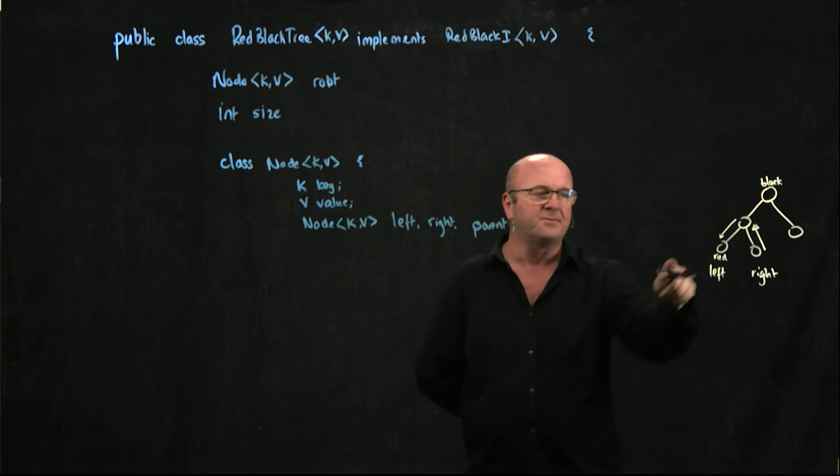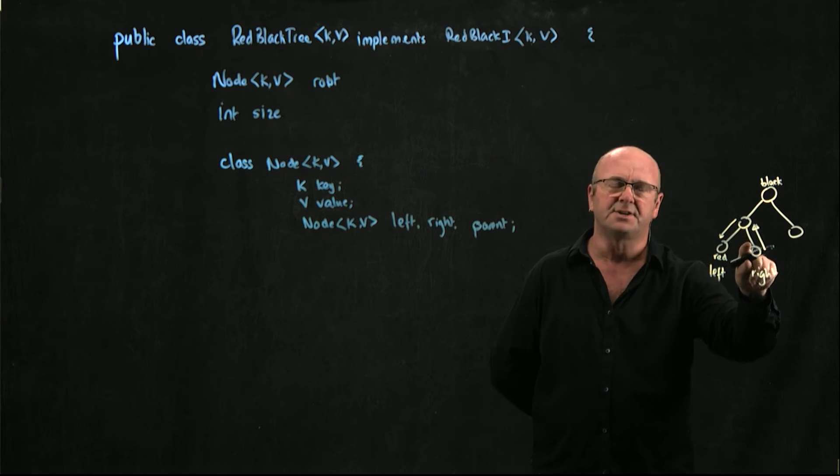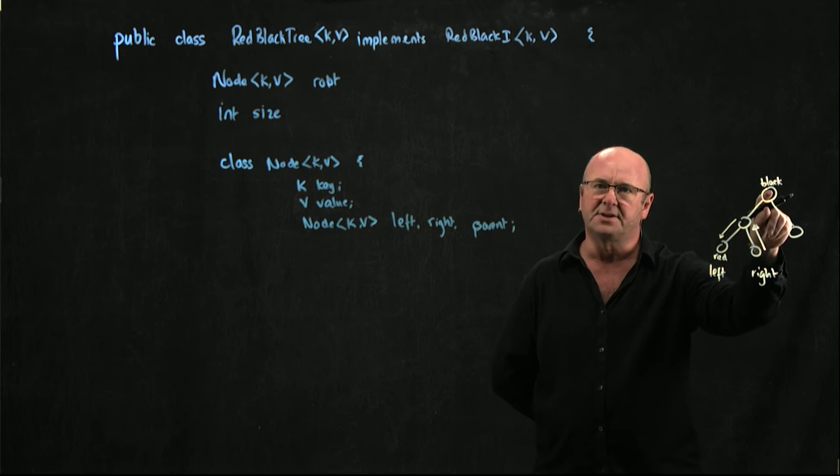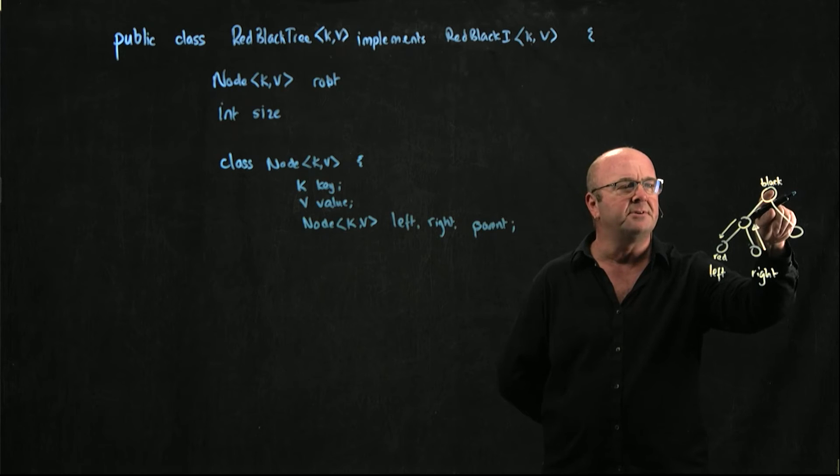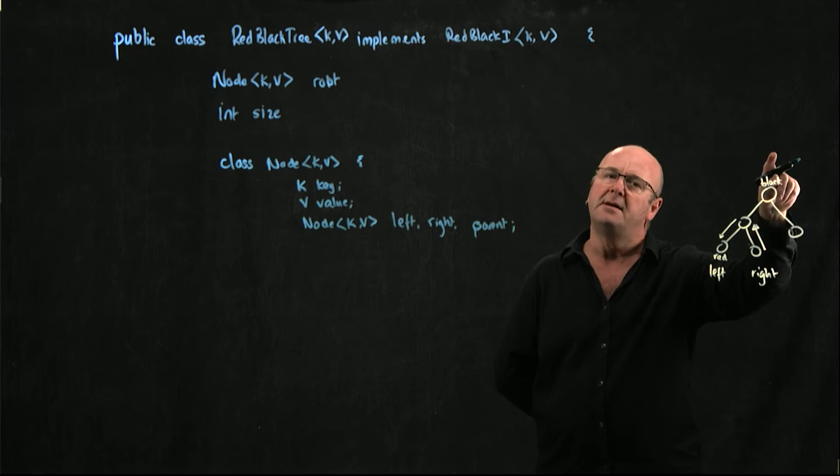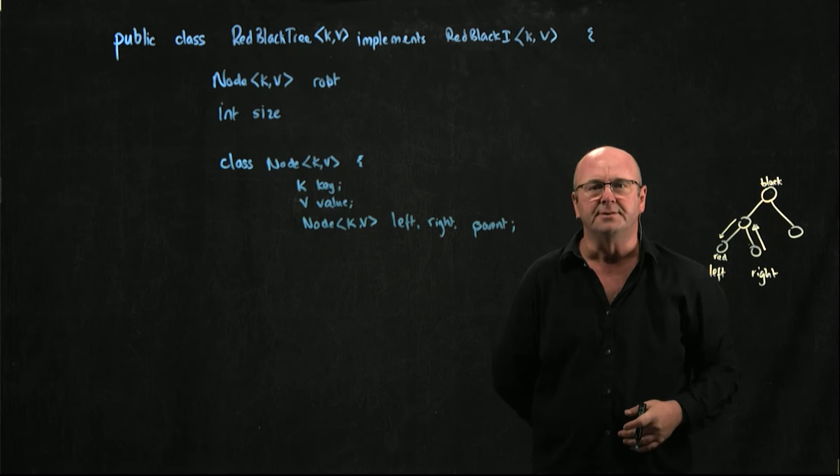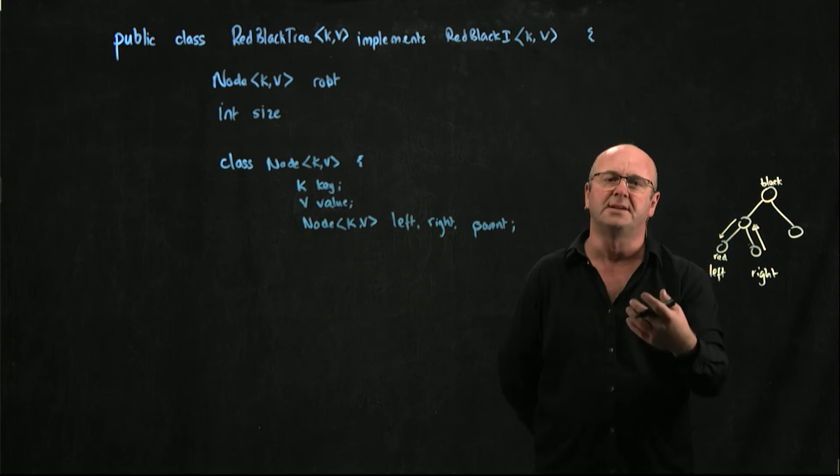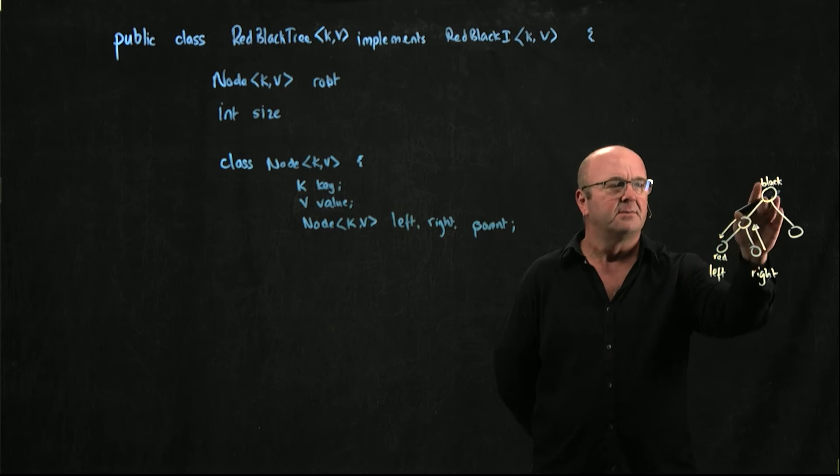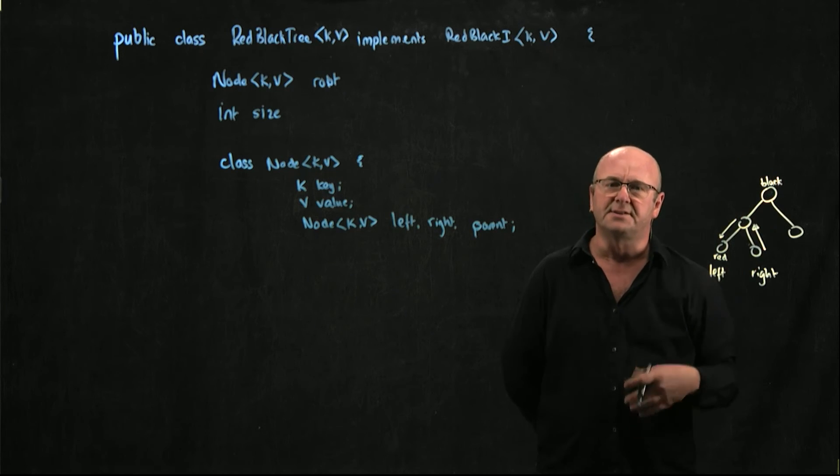So for any node, we have its left child, its right child, and the parent object. When we're root, the parent is null. That's one of the things that we'll use to determine whether we're at the root node. We can also use an equals - if a node is equal to root, it's the same. But also, if the parent is null, it's a root node.